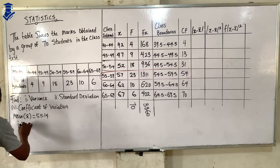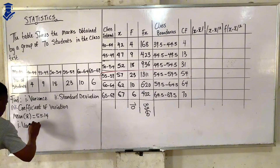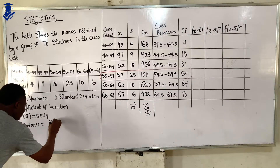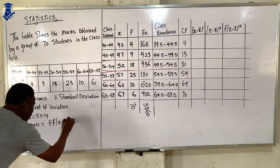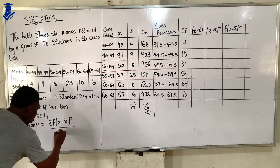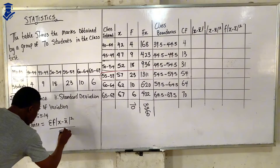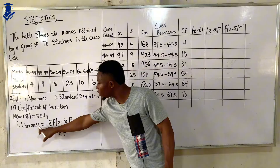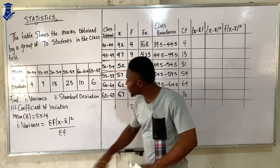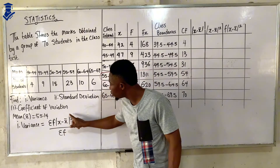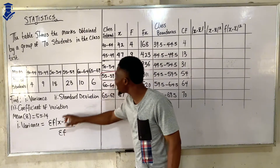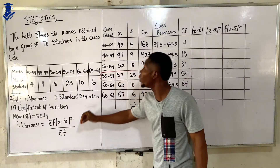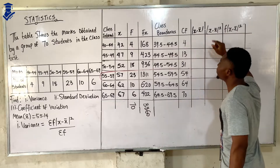The formula for variance is: summation of f times (x minus x-bar) all squared, over summation of f. To compute this, we need to find x minus x-bar, then (x minus x-bar) squared, and then f times (x minus x-bar) squared, and sum it all.